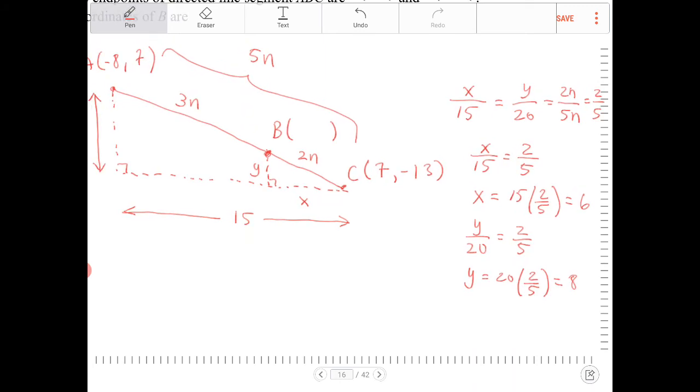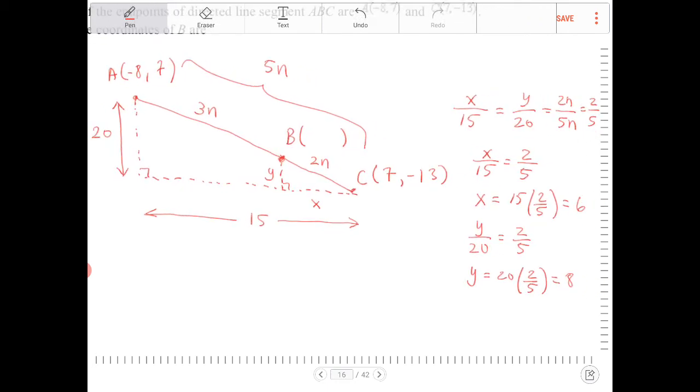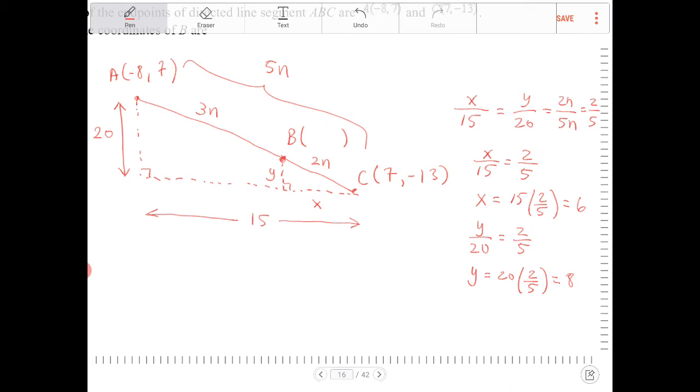So now I know what the x and y values are, 6 and 8. That's not necessarily telling me what the coordinates of B is. So looking at this, relative to point C,